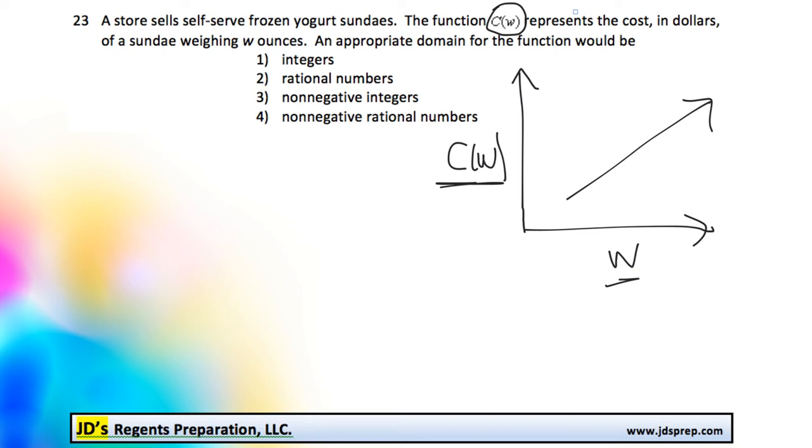Now, this has helped because what we're trying to find is an appropriate domain. And now that we've graphed it, we can picture, okay, we're talking about the x values, which in this case is the weight of the ice cream. So we're trying to find out what would make sense for the weight of the ice cream.